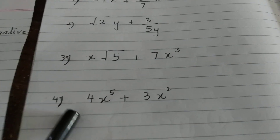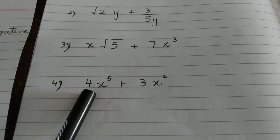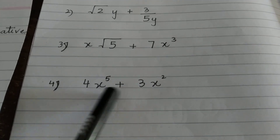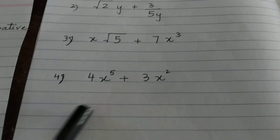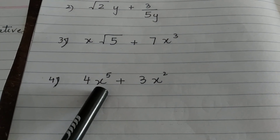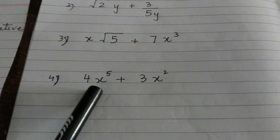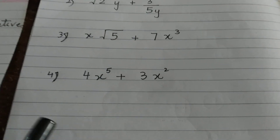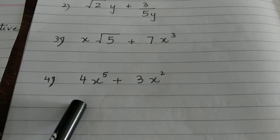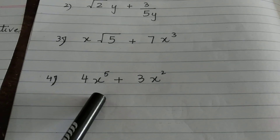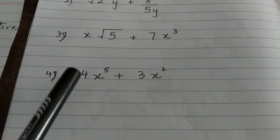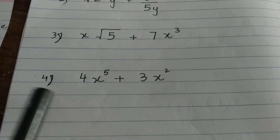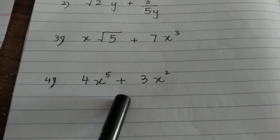The fourth expression: checking the first condition, the exponents are x to the 5 and x to the 2 — both positive, so the first condition is fulfilled. The second condition: x to the 5 and x to the 2 are not written in fractional form, so the second condition is fulfilled. The coefficients are 4 and 3, which are real numbers — third condition fulfilled. So this is a polynomial expression.